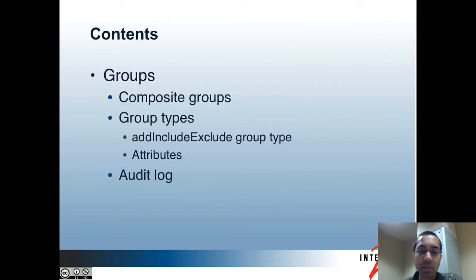Here are the topics I'll be covering in this part. In parts 3 and 4, I started to cover groups in the admin UI — how you can create, delete, and edit them along with privileges on groups, viewing memberships, adding and removing memberships, and importing and exporting memberships. In this part, I'll cover composite groups, the add-include-exclude group type, attributes, and the audit log for groups.